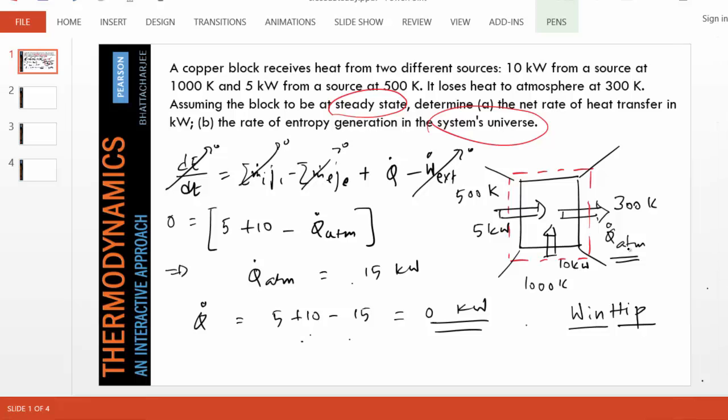And the next question is find the rate of entropy generation. So we write the entropy equation for a steady closed system. Again, the mass transfer or the transport terms are going to be immediately eliminated.